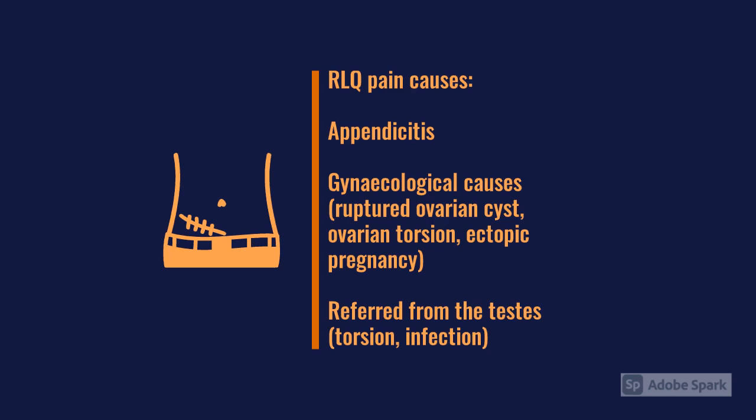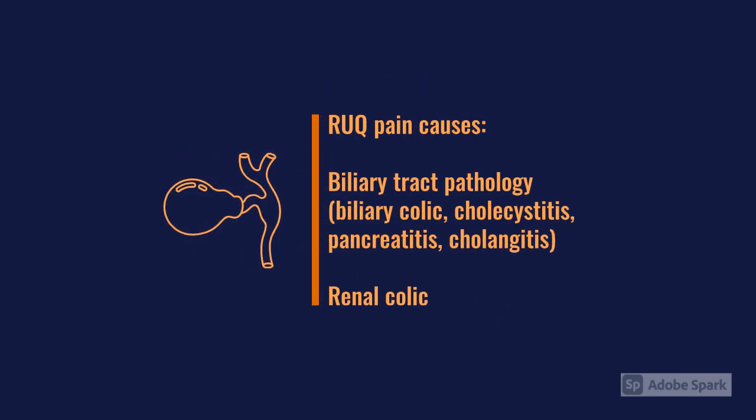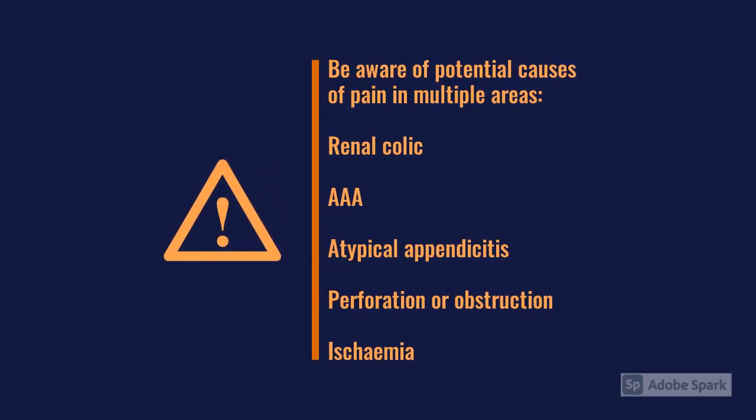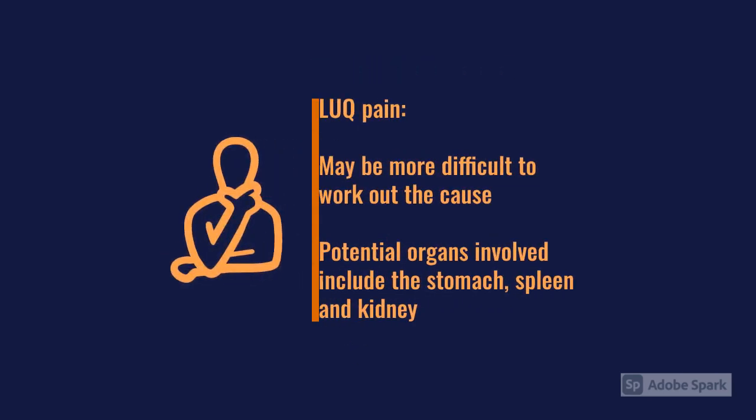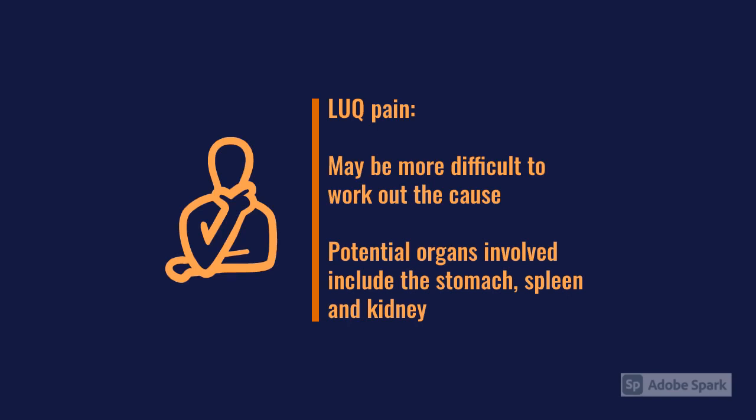Moving up to the right upper quadrant, we think more about biliary elements: biliary colic, cholecystitis, and cholangitis, as well as renal colic, which can present in the right upper or right lower quadrant. We also need to consider atypical presentations such as a triple A. The left upper quadrant is often a trickier diagnosis with a more atypical presentation.